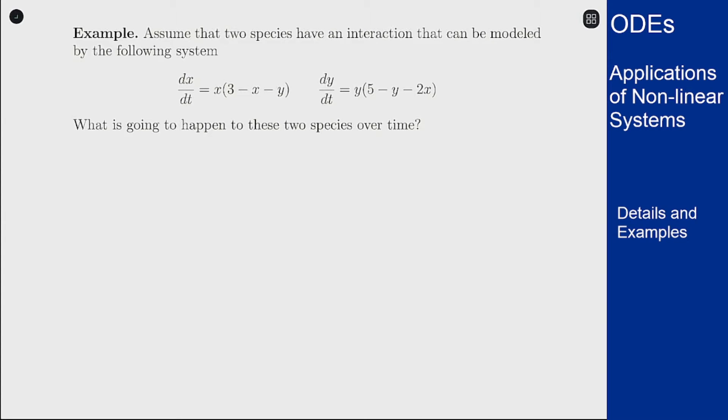In this video I want to take an example of a population model using a system, figure out what kind of interaction we have between these two species, and then figure out what's going to happen over time to the populations if they follow this system.